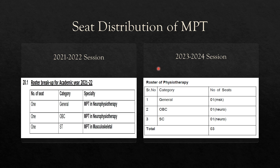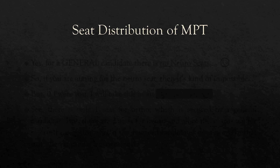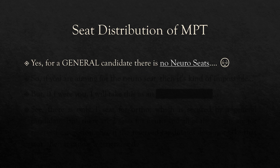This year the seat distribution has also changed. Previously in the 2021-2022 session, one seat was allotted to the general candidate in the neurophysiotherapy specialty, one OBC candidate got neurophysiotherapy, and the ST candidate got the musculoskeletal specialty. But this year it has changed — the general candidate will get the musculoskeletal specialty, and the OBC and ST candidates will get the neurophysiotherapy specialty respectively.